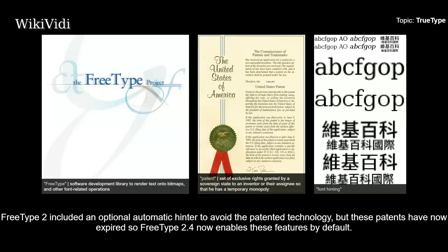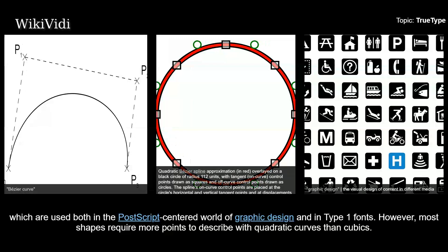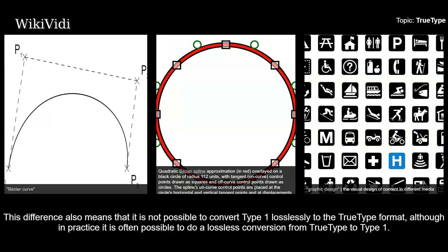Outlines. The outlines of the characters in TrueType fonts are made of straight line segments and quadratic Bézier curves. These curves are mathematically simpler and faster to process than cubic Bézier curves, which are used both in the PostScript-centered world of graphic design and in Type 1 fonts. However, most shapes require more points to describe with quadratic curves than cubics. This difference also means that it is not possible to convert Type 1 losslessly to the TrueType format, although in practice it is often possible to do a lossless conversion from TrueType to Type 1.